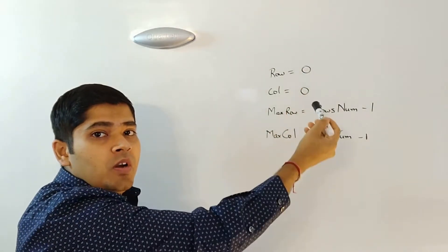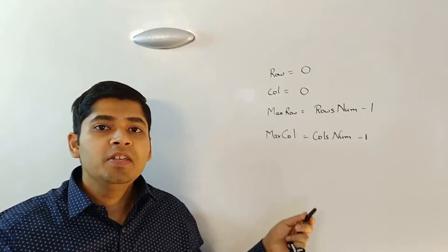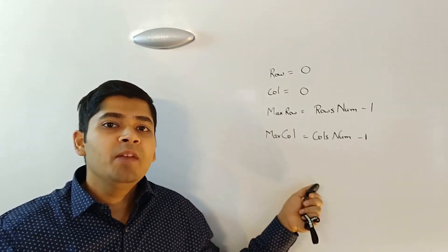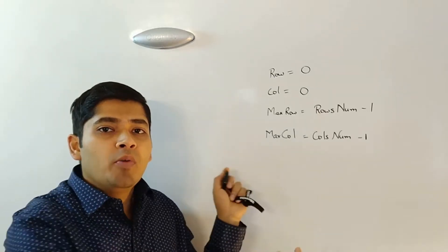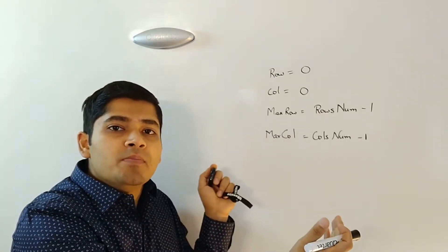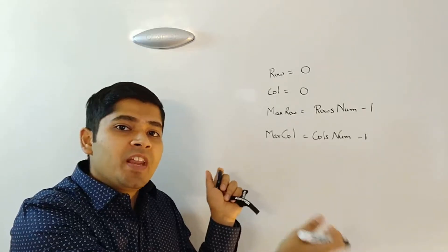The row, the column, the max row and the max column. These four variables will help us keep track of the boundaries of the rows and columns with which we are working for a specific ring.